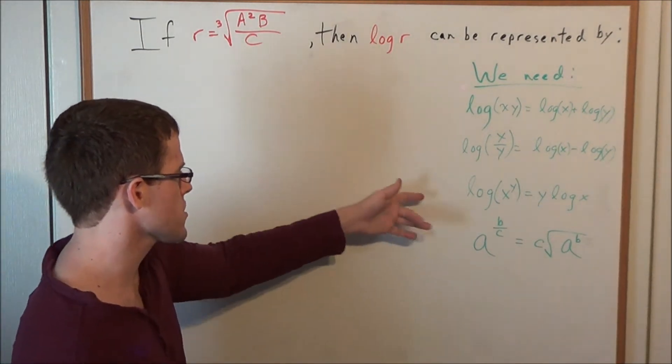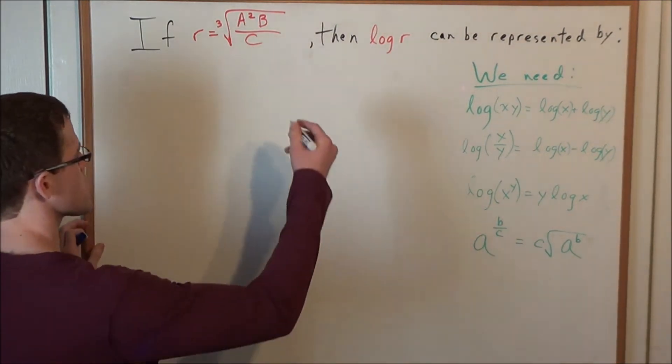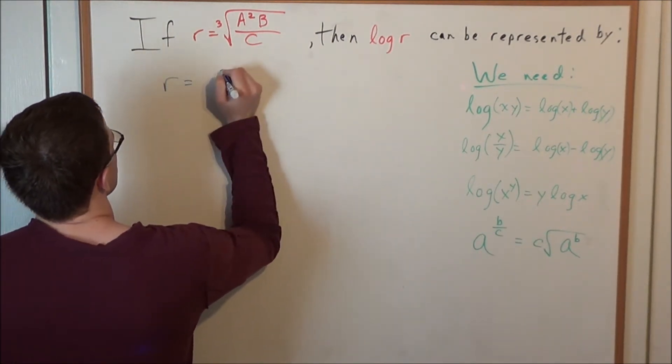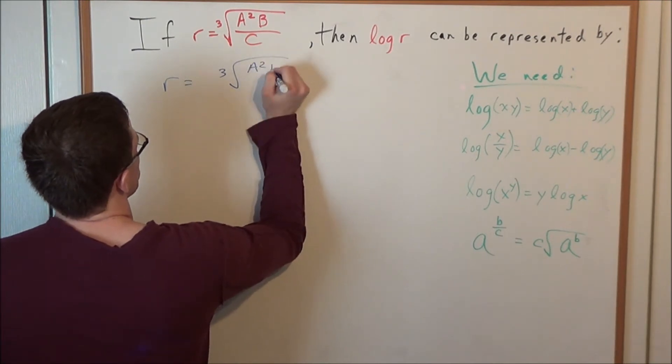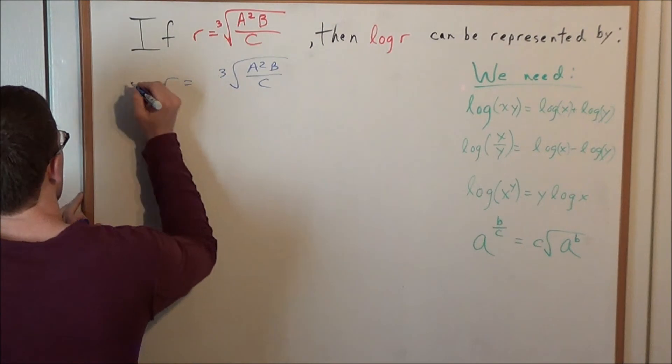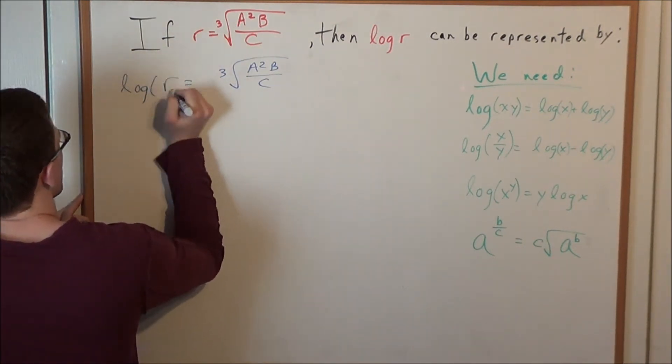So now that we have this information, let's go ahead and get started with this problem. So we're looking at, what did they give us? They gave us that r is equal to the cube root of a squared b divided by c, and they want us to find log r. So let's go ahead and take the log of both sides.